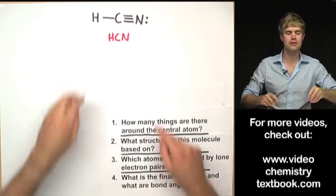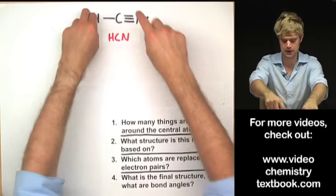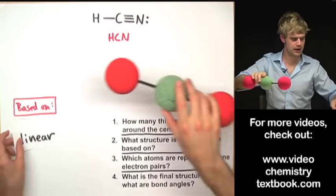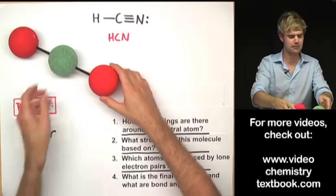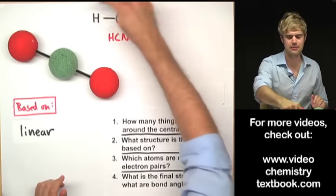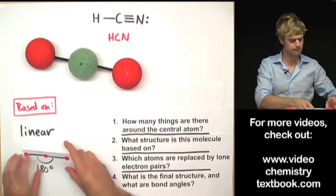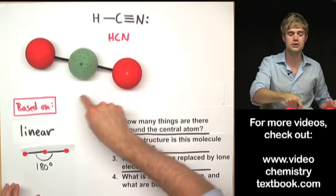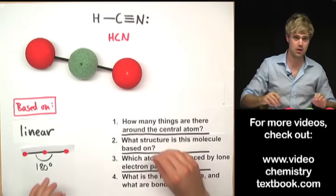HCN: how many things are around the central atom? There's one bond on one side and one triple bond on the other. Triple bonds still count as just one bond, so we have two bonds total around the central atom. Two things around a central atom means the structure is based on the linear shape — a central atom with one atom on each side. No atoms are replaced by lone electron pairs, so the final shape is linear with 180 degrees between the atoms.